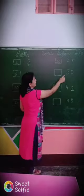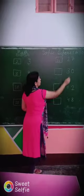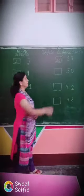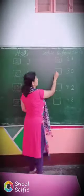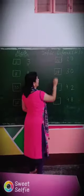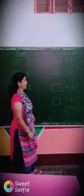3, 0 — 30. The backward digit of 30 is 2, 9 — 29.